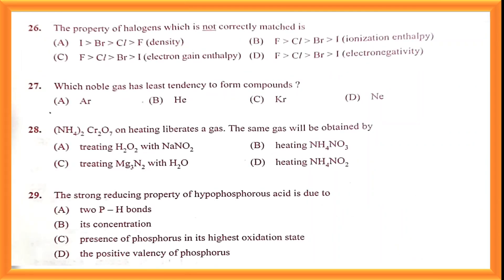Question number twenty-six: the property of halogens which is not correctly matched. Electron gain enthalpy is reversed — the correct order is I < Br < Cl < F, but option C has an incorrect order stated. Therefore option C is the wrong statement, and this itself is the correct answer.